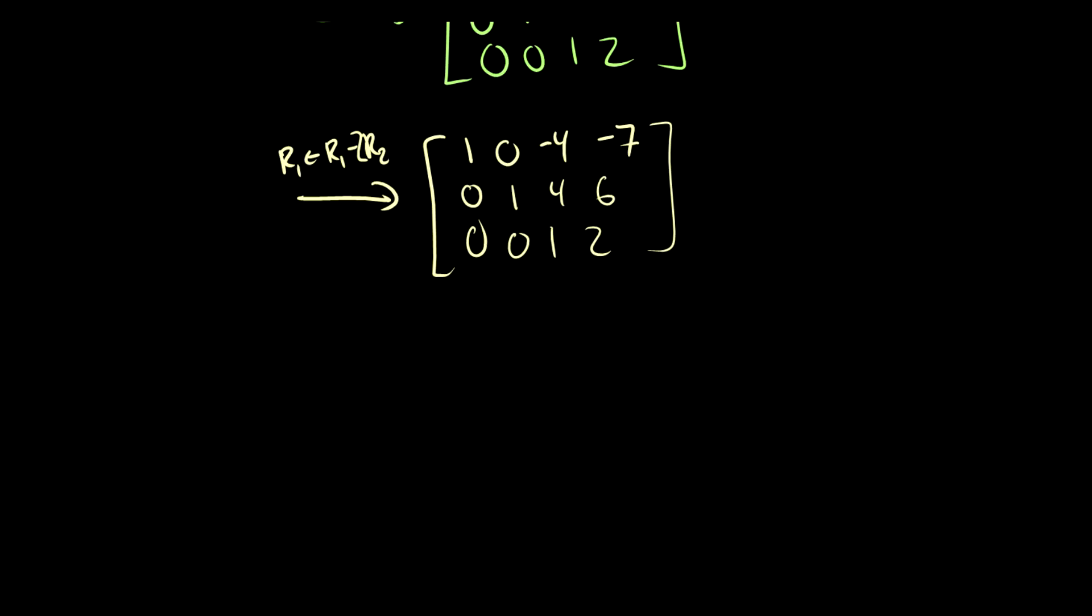Now we just have a couple fours to get rid of. Row one is going to become row one plus four of row three, and row two is going to become row two minus four of row three. Then we'll get an explicit solution. We get 1, 0, 0, and we're adding 8 so that's 1. Zero, 1, 0, and we're subtracting four of row three, so this will be 0 and negative 2. The last one will be 0, 0, 1, 2.